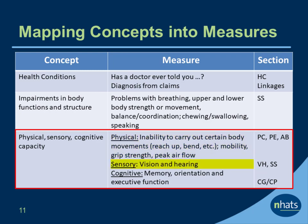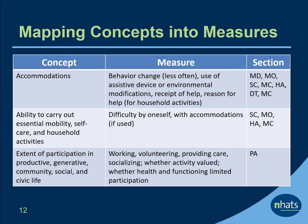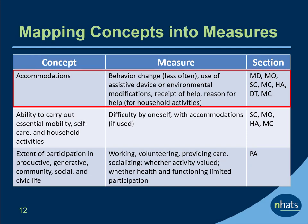Sensory capacity measures include items about vision and hearing. Cognitive capacity measures include self- or proxy-reported items and activities to measure memory, orientation, and executive function. For accommodations, measures include behavior changes, use of assistive devices, or environmental modifications, and receipt of help. For household activities, rather than help, the wording is 'someone did the activity with you or for you,' and the reason for help is assessed, such as health or functioning, or other reasons.